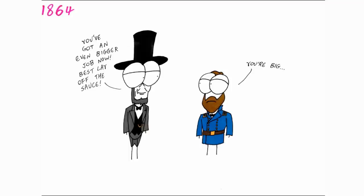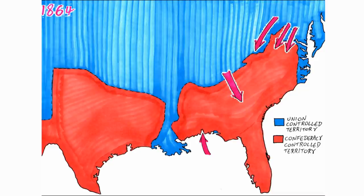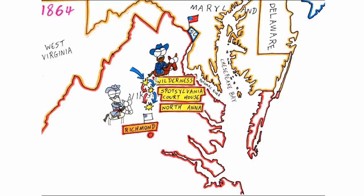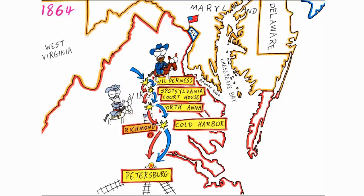With the start of 1864, Grant was made commander of all Union armies by Lincoln. He decided on a huge coordinated campaign, pushing into the Confederacy from all directions. Grant pushed his forces down through Virginia towards the Confederacy capital Richmond, fighting Lee's army along the way, both sides suffering heavily. It was a war of attrition. Despite setbacks for the Union, Grant pushed on, driving Lee to Richmond and the close-by Petersburg.